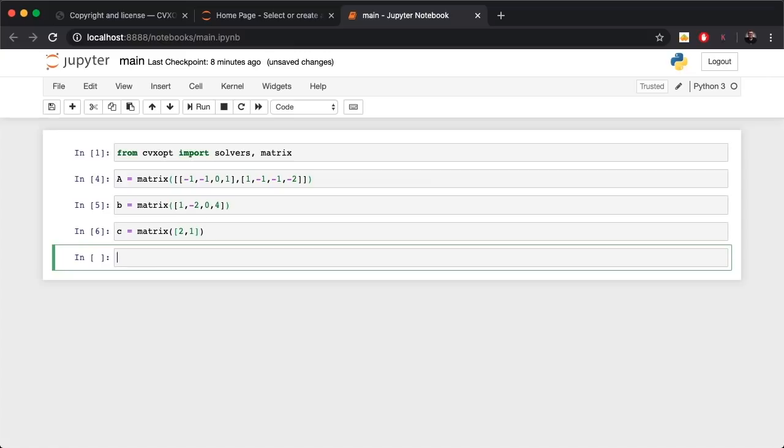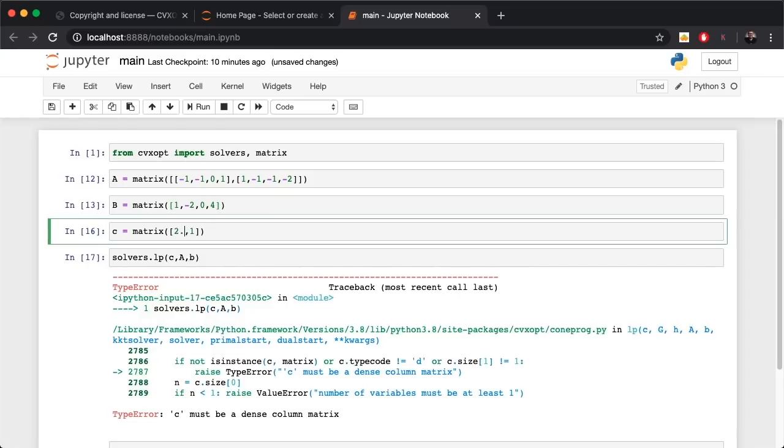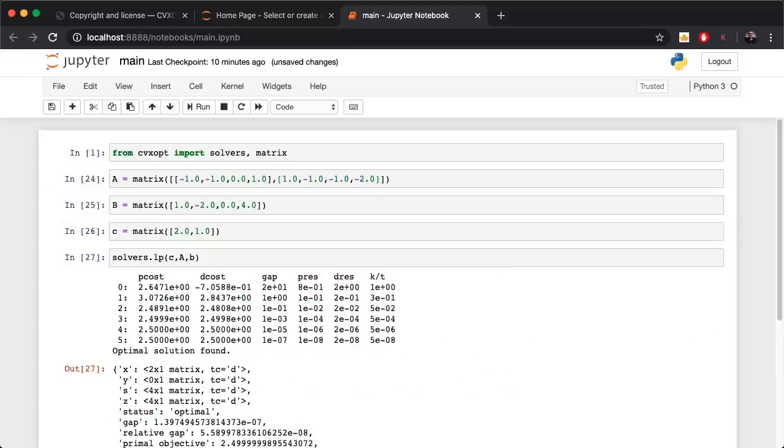Now to solve it, all you have to do is call solvers.lp, pass it your c, A, and b in that order. The reason we're getting this error is because I think those should be floats, so let me type in 0.0. Let's define floats instead of integers, all you have to do is just say 2.0, and there you go.